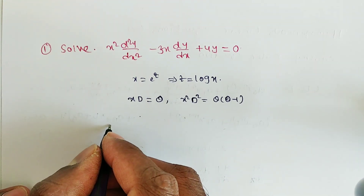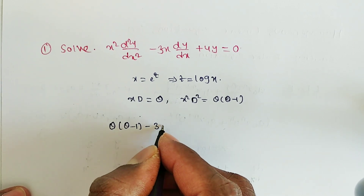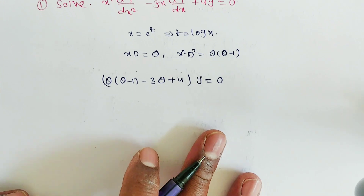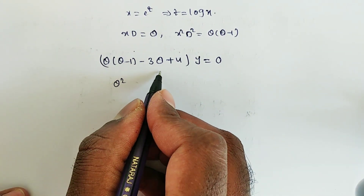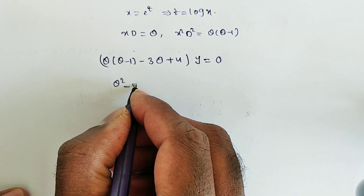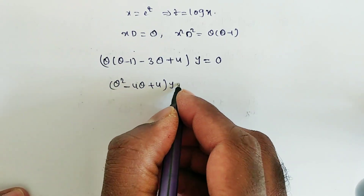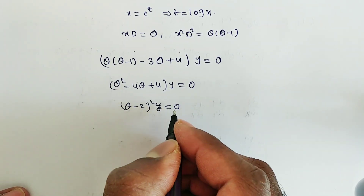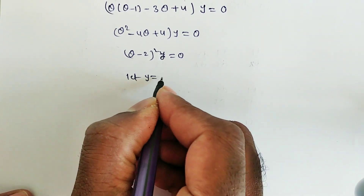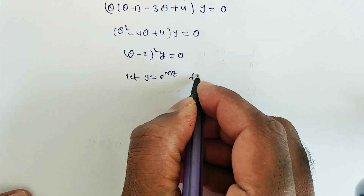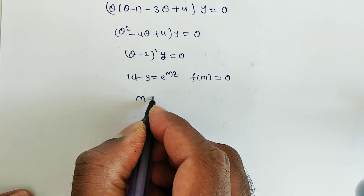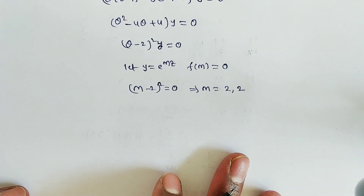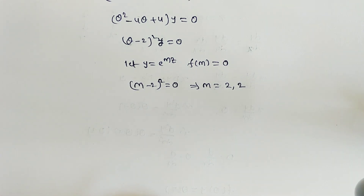Substituting into the equation: θ(θ-1) - 3θ + 4, acting on y, equals 0. Simplifying: θ² - θ - 3θ + 4 = θ² - 4θ + 4 = 0, which factors as (θ - 2)² · y = 0. Assuming y = e^(mz) as a solution gives the auxiliary equation (m - 2)² = 0, so m = 2, 2. The roots are real and repeated.